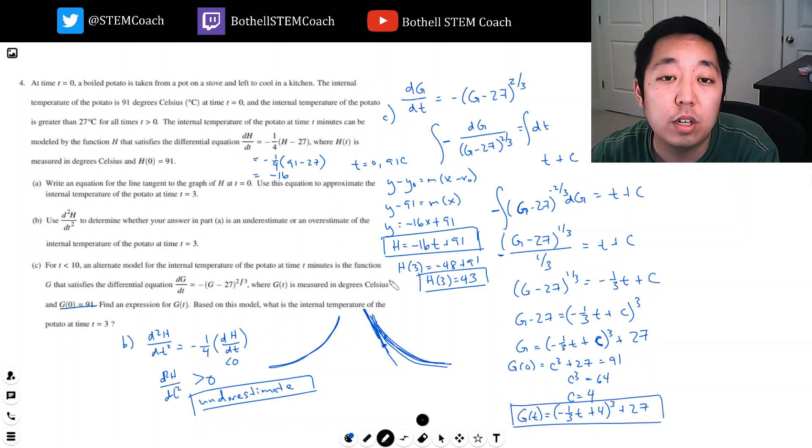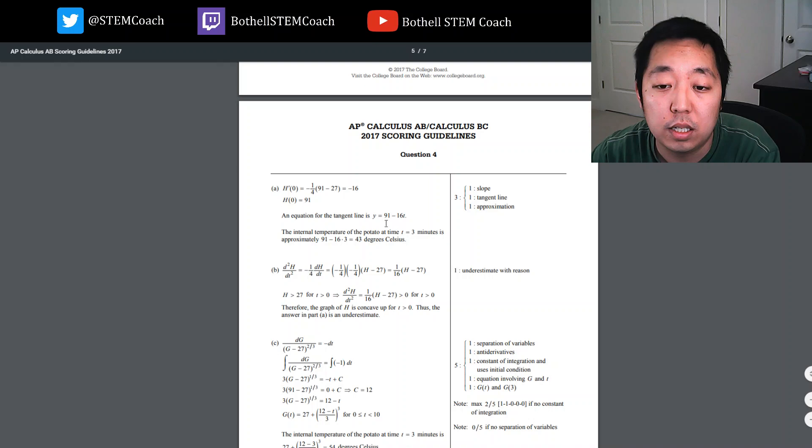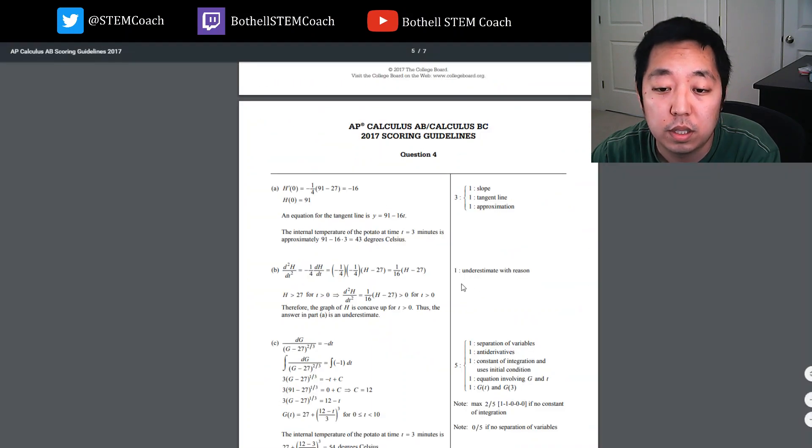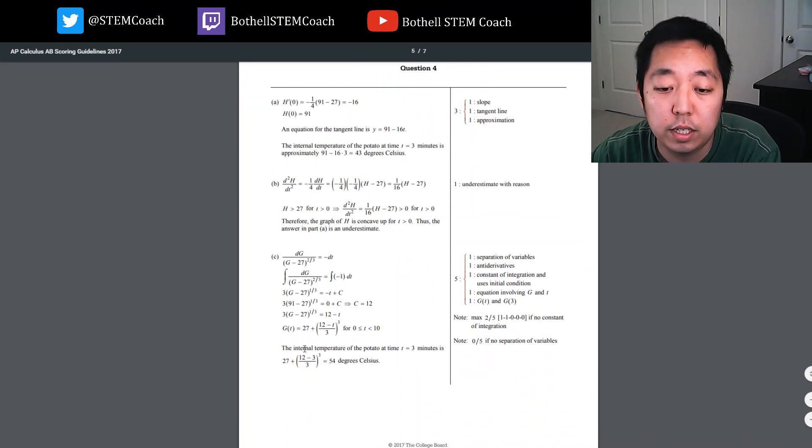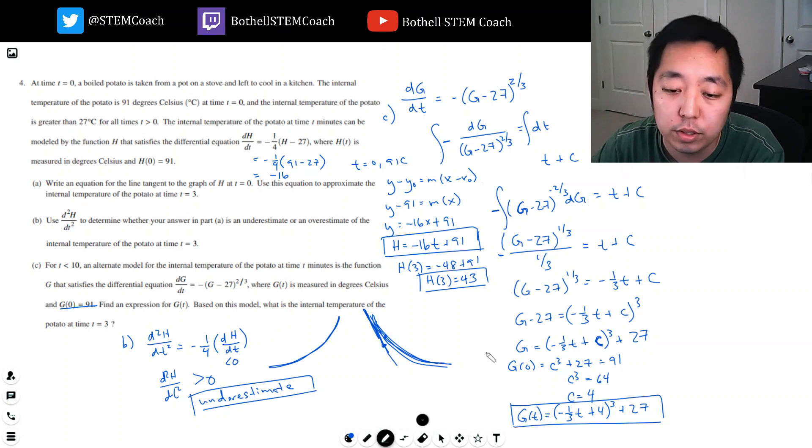So g(t) equals (negative one-third t plus 4)³ plus 27. Now I should have plugged in three. What is the internal temperature at time t equals three? g(3) equals (negative one plus 4)³ plus 27. That's 3³ plus 27, which is 27 plus 27, which is 54 degrees.